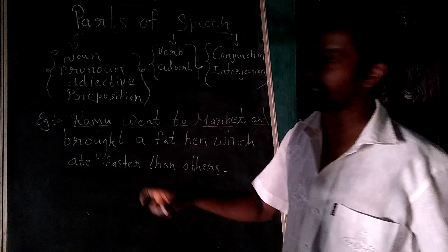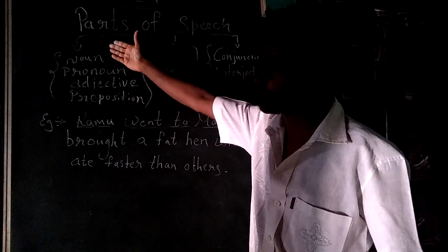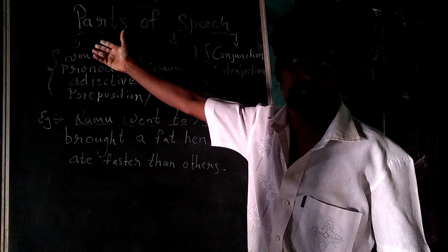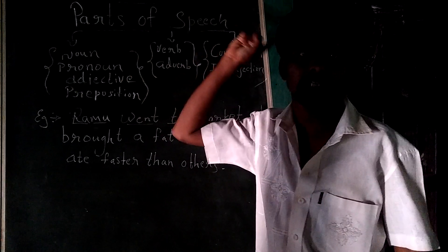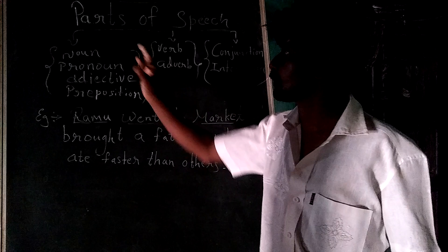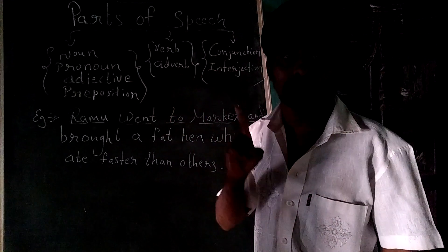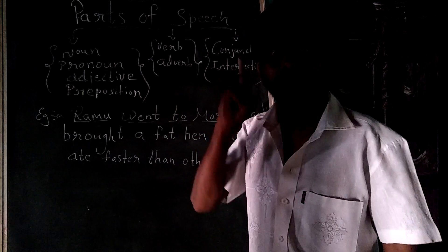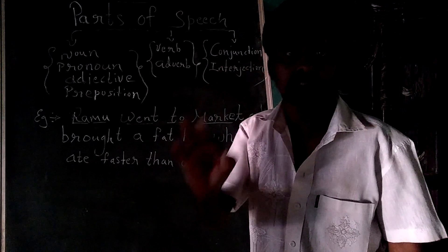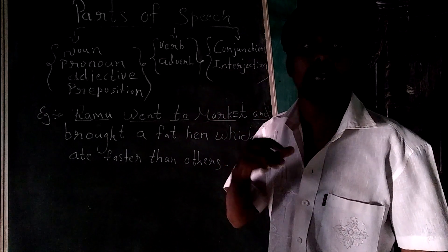You can see briefly — I'll explain it once again. A naming word is called a noun. It may be the name of a person, name of a place, name of a thing, name of a bird, animal, etc.